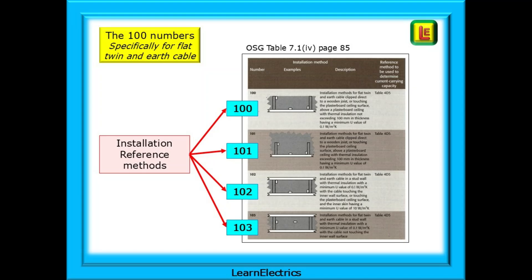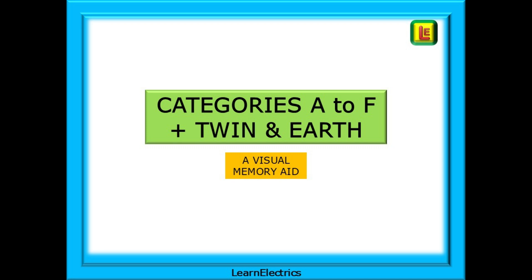Page 85 shows the 100 numbers - installation reference methods 100, 101, 102, and 103. These are specifically for flat twin-and-earth cable and are the methods you are most likely to reference in domestic scenarios. It's worth taking a moment or two to read the information against each method. I have a visual memory aid that I've used for years - I've visualised the letters and numbers of the different methods with a picture of the method. It works for me and it might work for you when on-site.